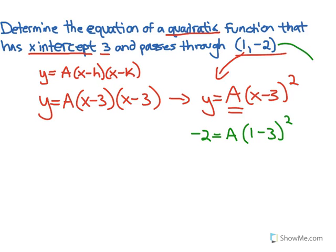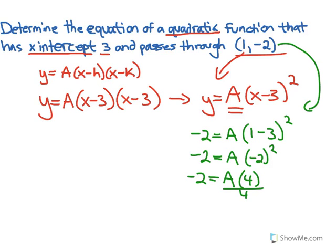And the reason we can sub this point in here is because that's really what a quadratic function is saying. Right, it's saying y follows this pattern with x. So we can always plug in an x value, plug in a y value, and set those patterns equal to each other. Now we can easily solve for a. Negative two equals a. One minus three is negative two squared. So negative two equals a. Negative two squared is four. Divide by four on both sides.